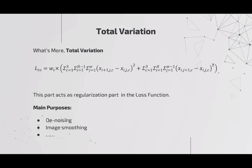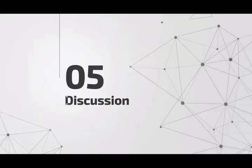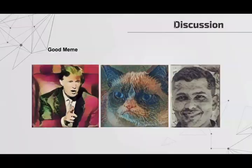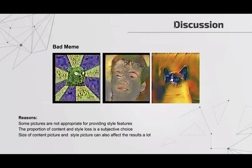We now present our results and discussion. Here are examples generated by our model which look great — we can keep the objects in the content picture while being stylized nicely. But we also find our model may generate unexpected results where objects are blurred and the style is also strange. There may be three reasons: some pictures are not appropriate for providing style features; the proportion of content and style loss is subjective and not adjusted automatically; and the size of the content and style pictures can also affect results significantly.